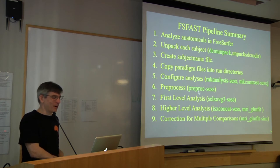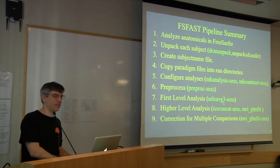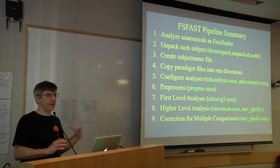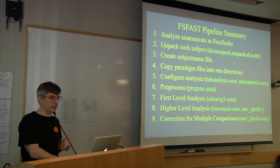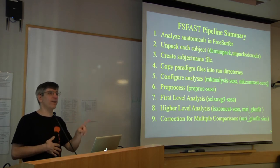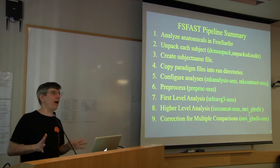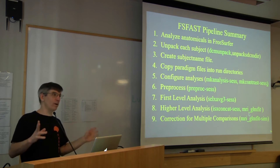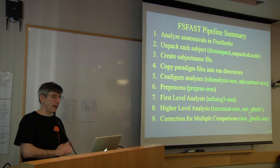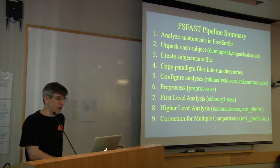Once you've collected all your data and reduced it to one number per subject at every point in space, it doesn't really matter that it's fMRI — it could be thickness, PET, or DTI data. It's just one number per subject going into the group analysis stream. Then you correct for multiple comparisons. These last two steps are things you've already covered, but you'll go over them again.